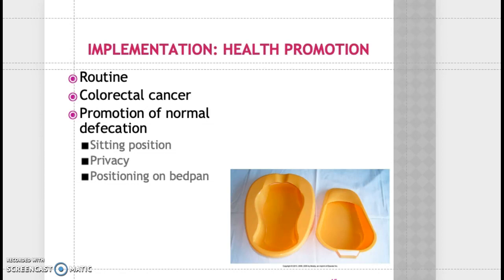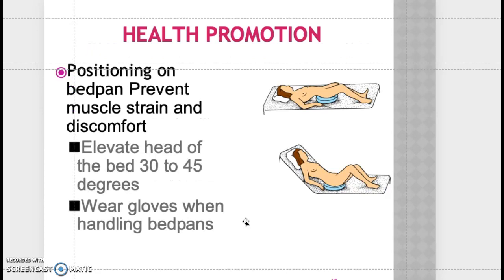Maintaining patient privacy is important. When doing a rectal examination, pull the curtain and close the door. When positioning a patient on a bedpan, we have the fractured pan and the regular bedpan. The head of the bed should be flat when placing the patient on the pan, but once they are on it, the head should be raised to 30 to 45 degrees. There is an image showing the proper anatomical position for placing a patient on a bedpan.